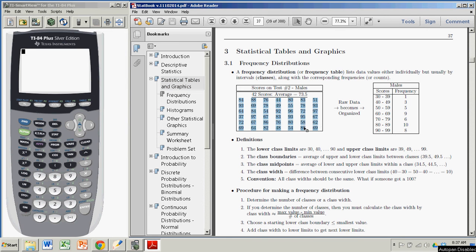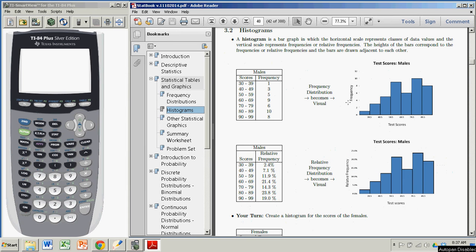For demonstration purposes, we'll use the 42 test 2 scores for the males that are found at the very beginning of chapter 3. So we have this table of data, very unpleasant, hard to make any sense out of it. In the book, we first made a frequency table and then a histogram, but we're going to go straight to the histogram with the TI.